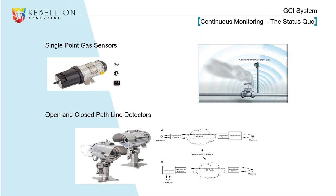In the past we had single point gas sensors and open path line detectors. About 80% of Rebellion's installs are because either single point gas sensors or open path line detectors missed a detection and an incident occurred, unfortunately. So clients go out looking for something more and come across our technology. It's an excellent supplemental technology. With single point gas sensors, we're waiting on gas to cross that sensor, and environmental conditions can hinder that. With open path line detectors, we know we have a leak but cannot identify the source — our technology covers both of those aspects.